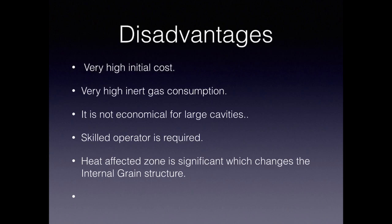There are also disadvantages. The initial setup cost is very high because the materials used in plasma machining, such as the tungsten electrode, are very costly. Another disadvantage is the consumption of inert gas — tanks are used regularly, which increases cost. Large cavities cannot be machined economically because they consume more inert gas and energy. The process is not suitable where large-scale, low-precision machining is needed.